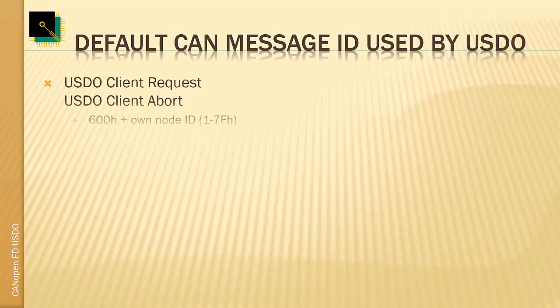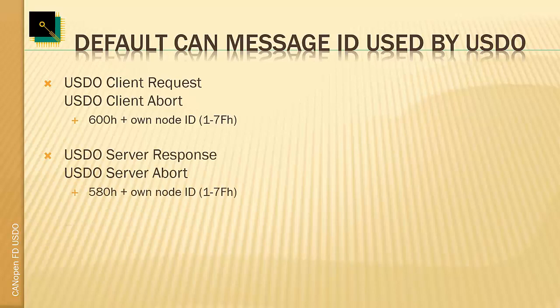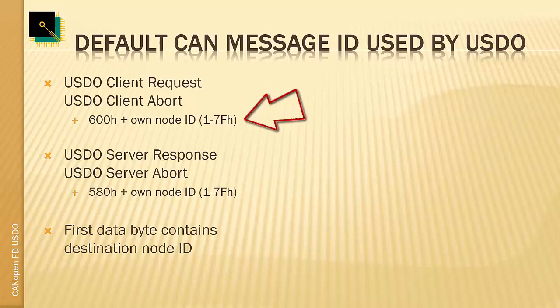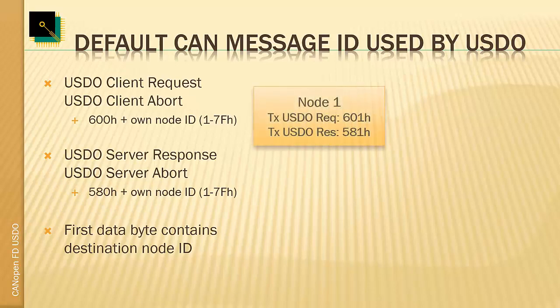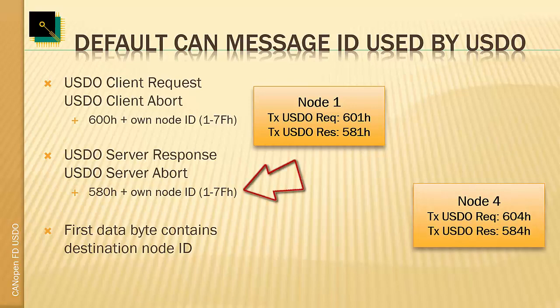For the USDO service, each device has two CAN IDs it can use to transmit either requests or responses. There is one CAN ID used to transmit USDO client requests or aborts, which uses the CAN ID 0x600 plus the own node ID. Then we have the server response or server abort, transmitted using the CAN ID 0x580 plus the own node ID. For both message kinds, the very first data byte determines the destination - it contains the node ID of the destination.